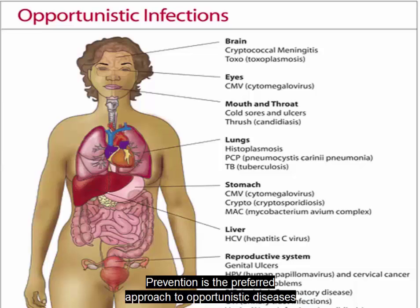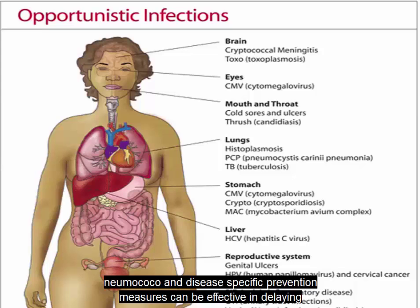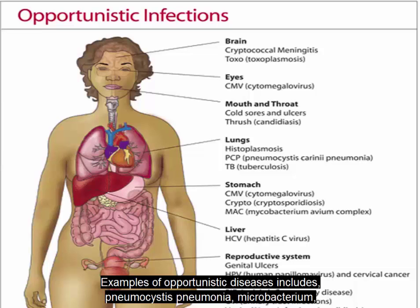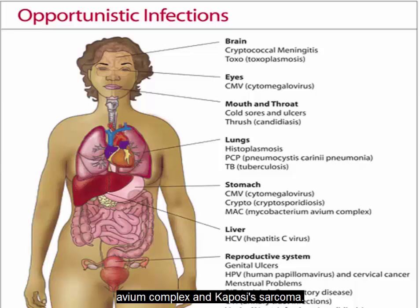Prevention is the preferred approach to opportunistic diseases, along with adequate antiretroviral therapy. Vaccines for hepatitis B, influenza, pneumococcal, and disease-specific prevention measures can be effective in delaying or preventing many of the opportunistic diseases associated with HIV. Examples of opportunistic diseases include Pneumocystis pneumonia, Mycobacterium avium complex, and Kaposi's sarcoma.